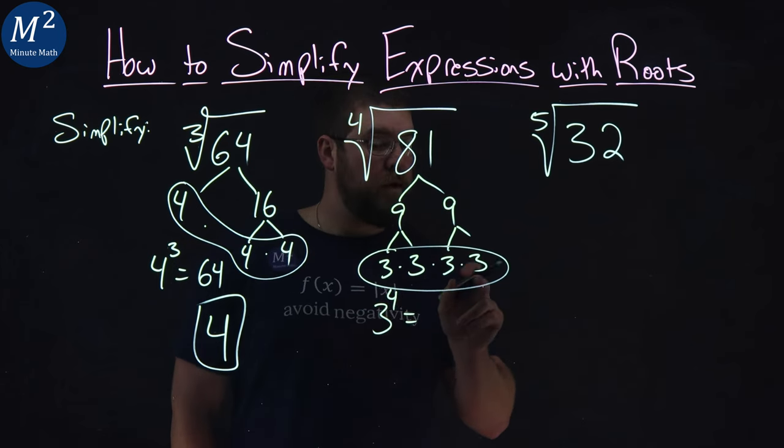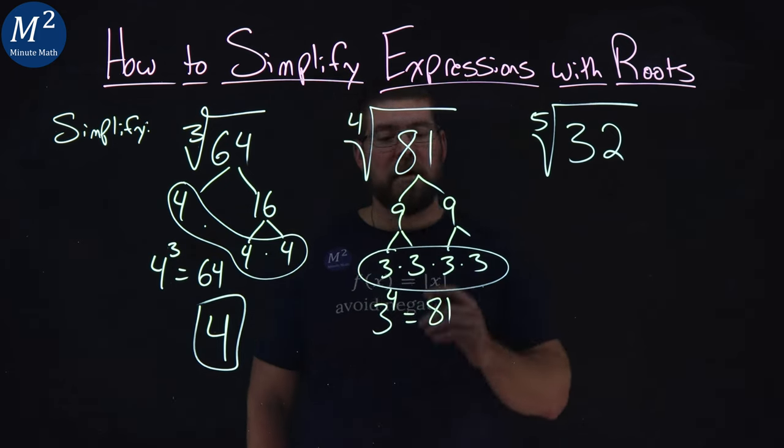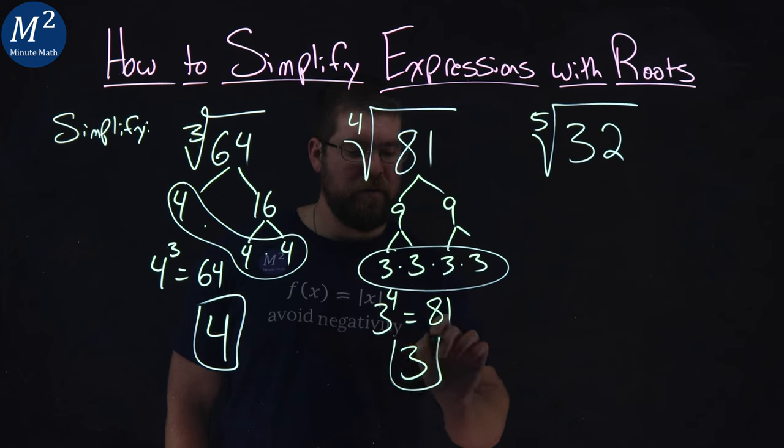3 times 3 times 3 times 3, 3 to the fourth power, is equal to 81. Therefore, the fourth root of 81 is a good old 3.